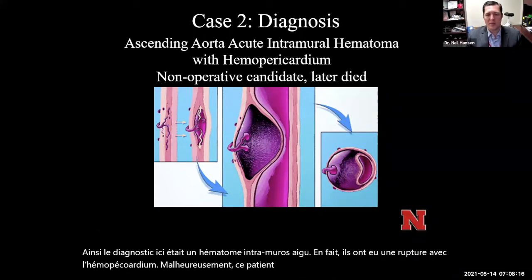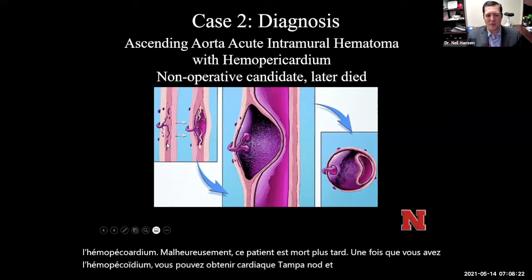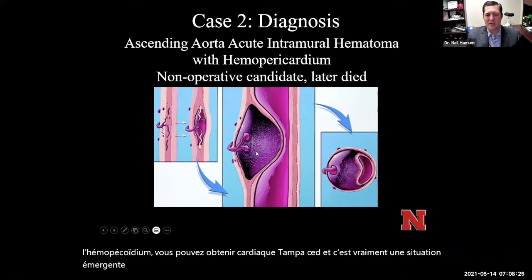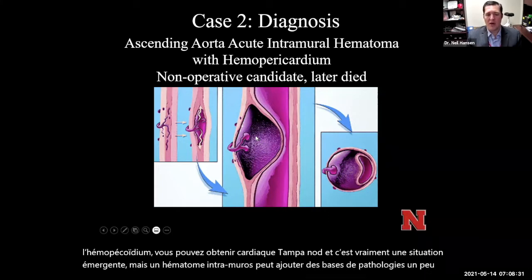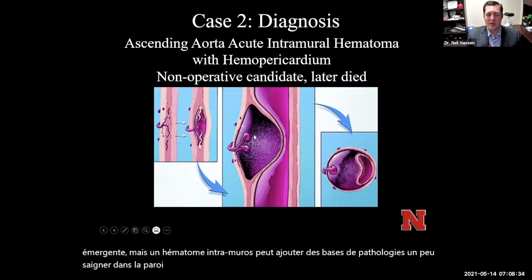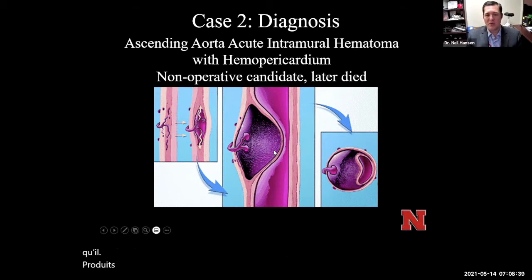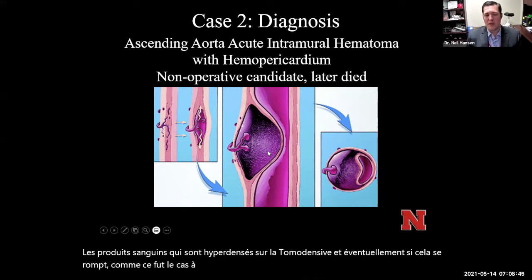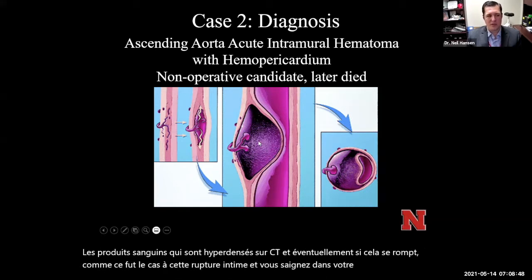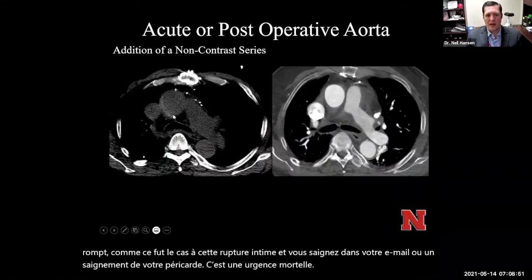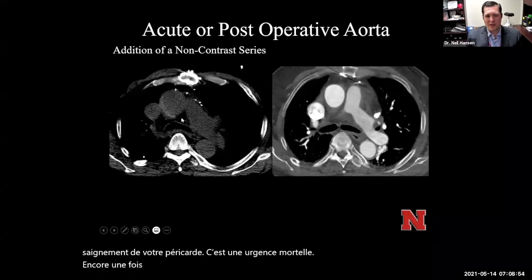Scrolling through the non-contrast images, you can see in the distal ascending aorta near the arch where it kind of starts and extends all the way down to the aortic root and the sinotubular junction. The diagnosis was an acute intramural hematoma with some rupture causing hemopericardium. Unfortunately this patient later died — once you have hemopericardium, you can get cardiac tamponade and it's a real emergency. An intramural hematoma at its basics is a bleed into the wall of the aorta, causing that high-attenuation thickening because blood products are hyperdense on CT. These intramural hematomas are a lot easier to see on non-contrast than on the post-contrast arterial phase.